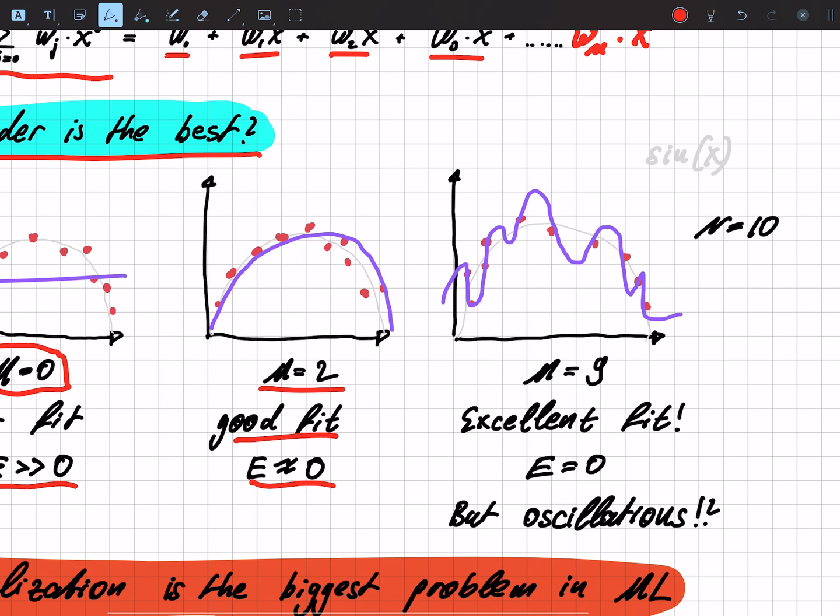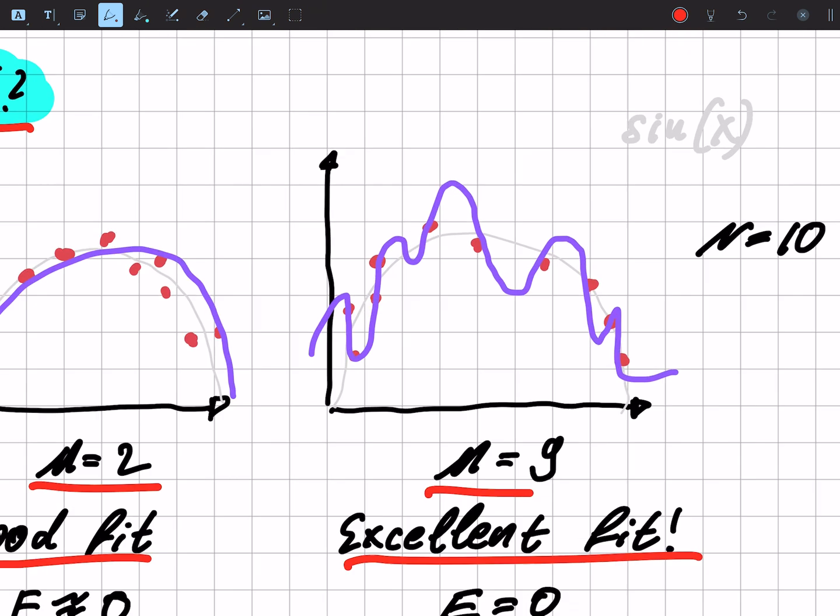If we choose a polynomial of degree nine, we have an excellent fit because the error is actually truly zero, but we have those oscillations.